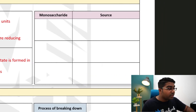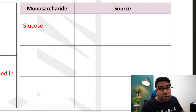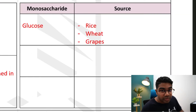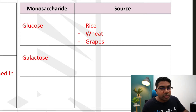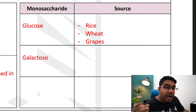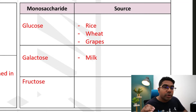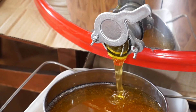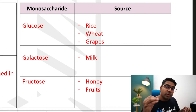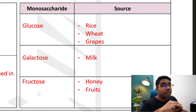There are three monosaccharides. The most common is glucose, which can be found in rice, wheat, and grapes. The next monosaccharide is galactose — you're likely familiar with the related term lactose, which is found in milk. The last monosaccharide is fructose, which can be found in honey and fruits. If you've tasted all of these, you'll know that each monosaccharide has a slightly different type of sweetness, even though all of them are sweet.